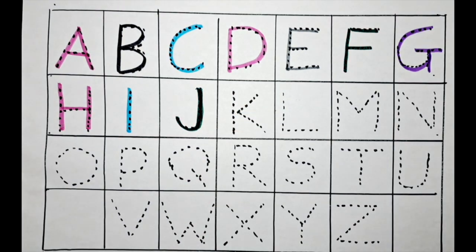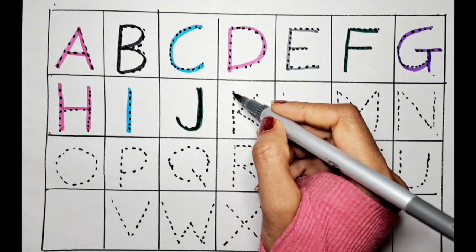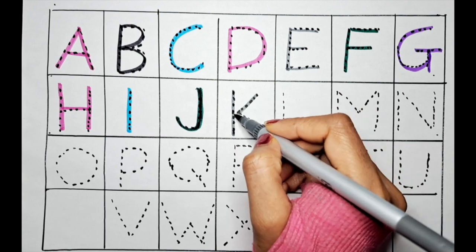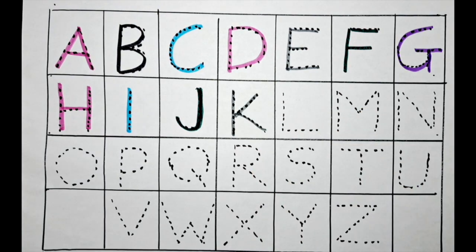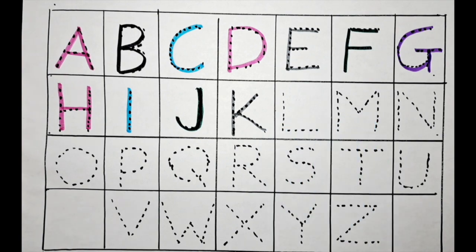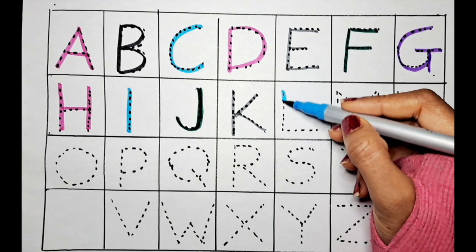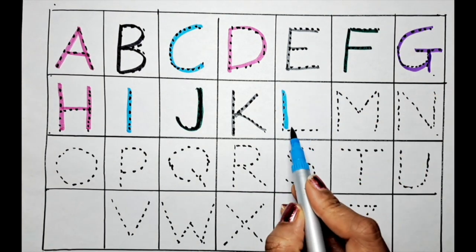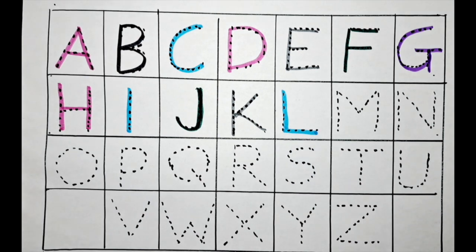The next letter is K. Let's do the K with the gray color. K for kangaroo. The next letter is L. Let's do it with the blue color. L for lamb.